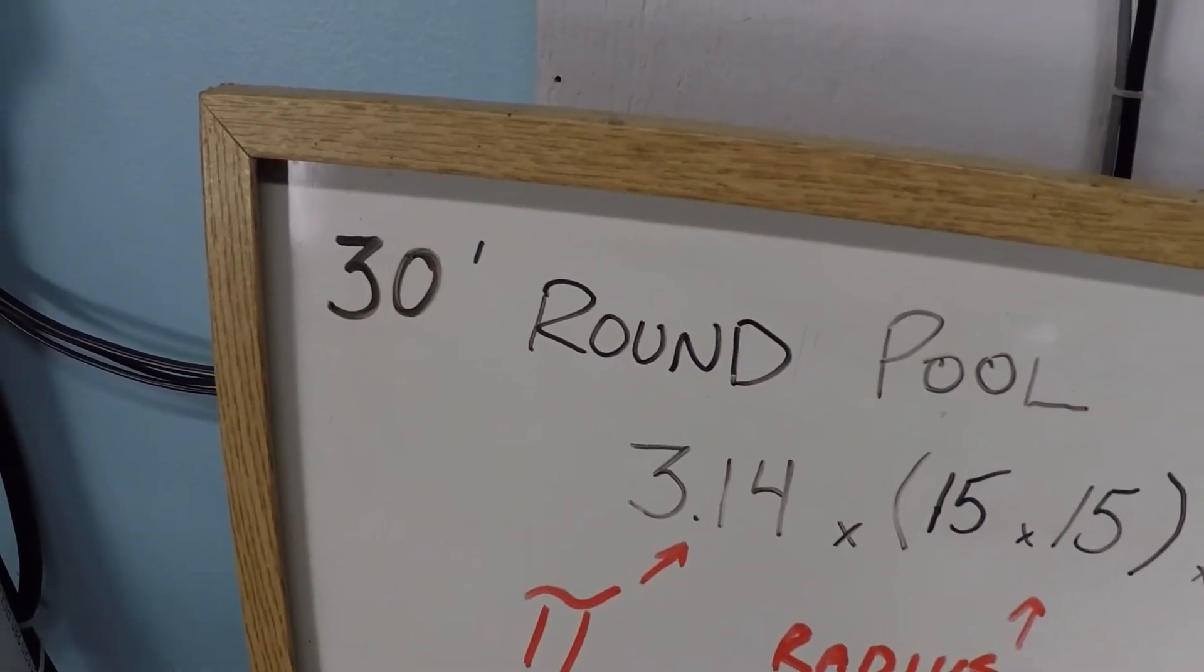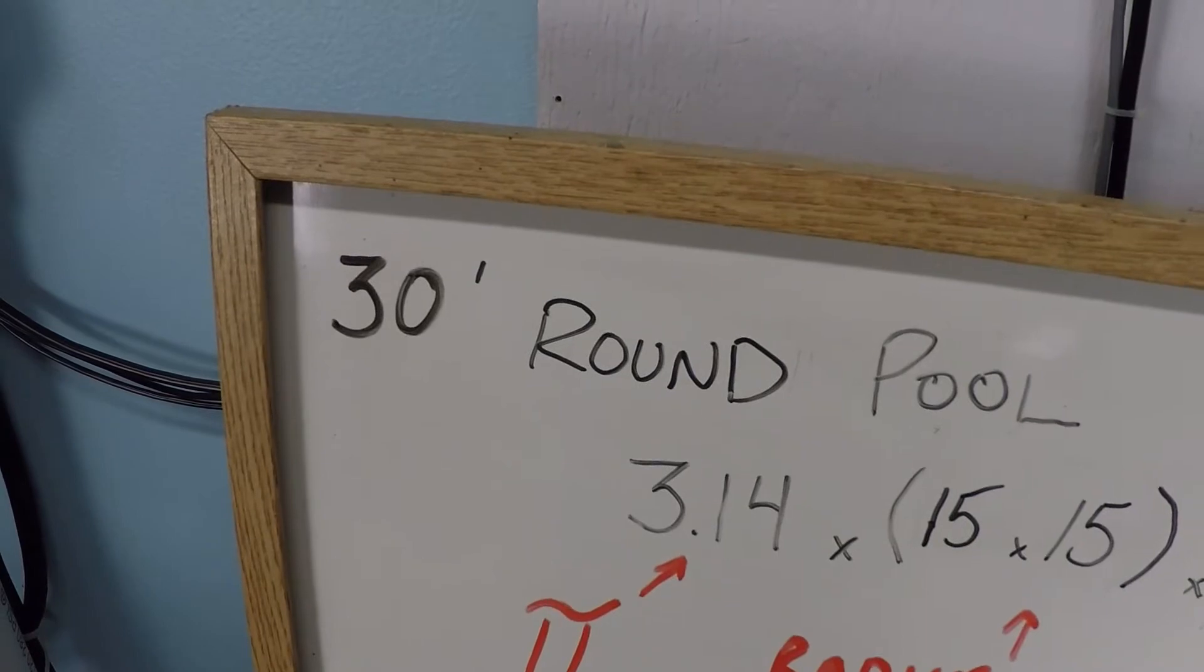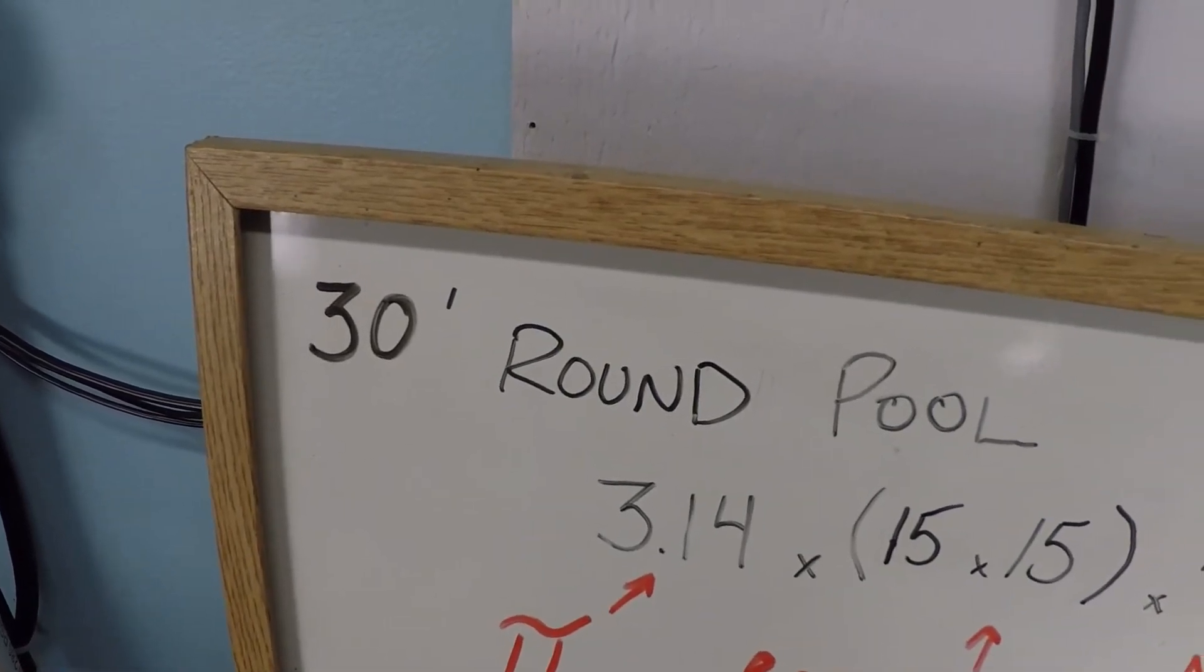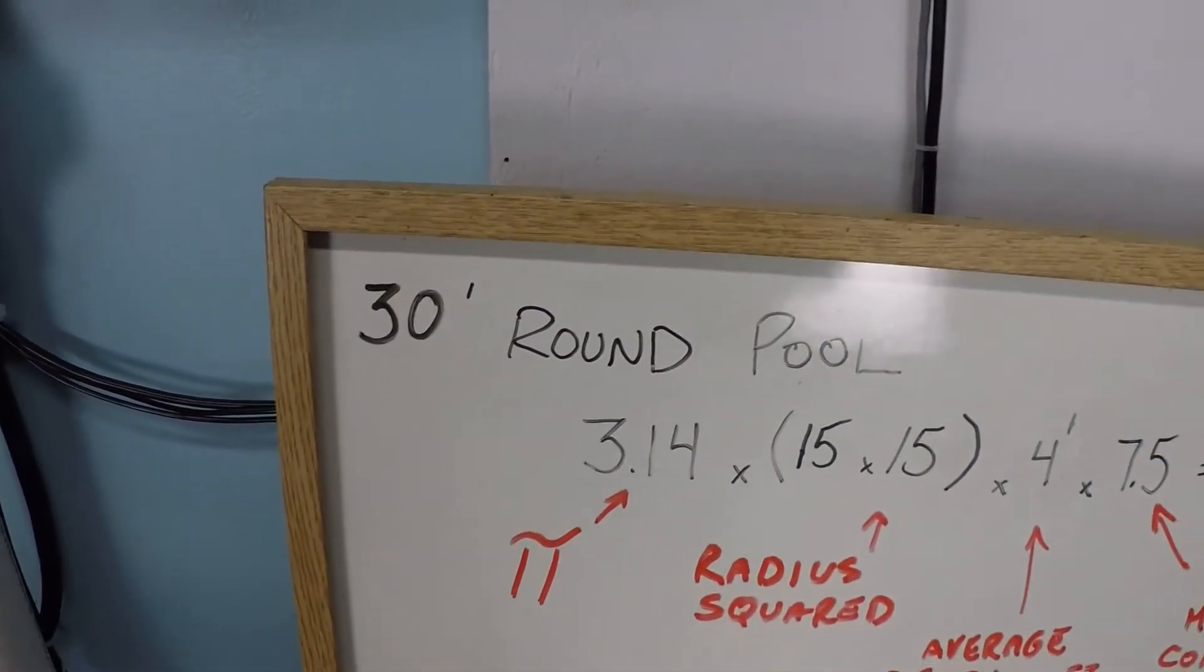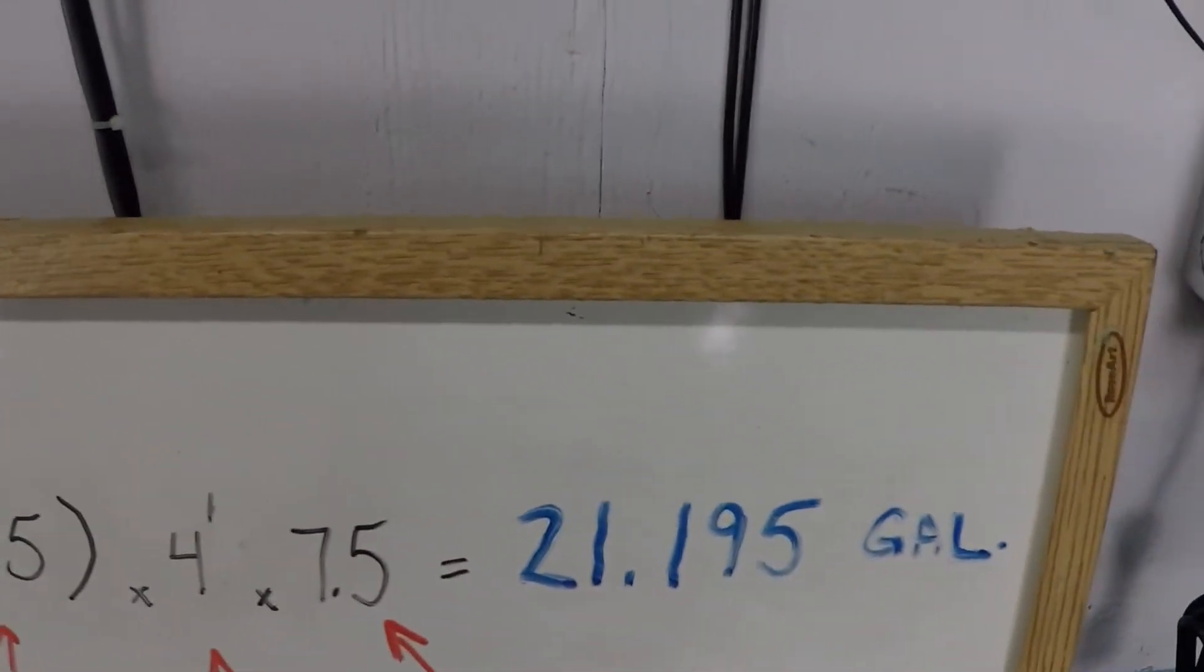Let's design a filtration schedule for a variable speed pump for a 30-foot diameter round pool. The first thing that we need to know is the volume of the pool.